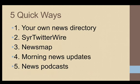So quickly to summarize, five quick ways to keep up on the news: make your own directory with Symbaloo, or use some kind of bookmarking so you have everything right together — and if it's easy to use, you'll use it. Subscribe to the Syracuse Twitter Wire to find out what's on Twitter from organizations around Syracuse, and from media outlets and news makers. Check News Map, it's a visual representation of Google News. There are a couple of good morning news updates, and think about doing some podcasts as you're walking to and fro around campus.